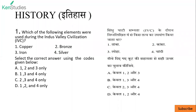The first question is: which of the following elements were used during the Indus Valley civilization? The options are: First, copper. Second, bronze. Third, iron. Fourth, silver.